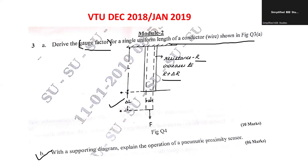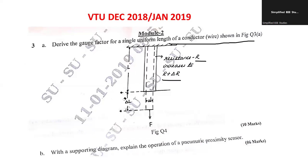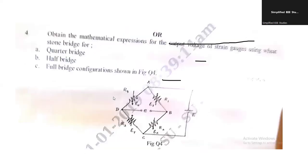Second question 3B: with a supporting diagram, explain the operation of a pneumatic proximity sensor. Explanation carries 3 marks and the diagram carries 3 marks. I have already explained this in detail in my video — kindly go through that.